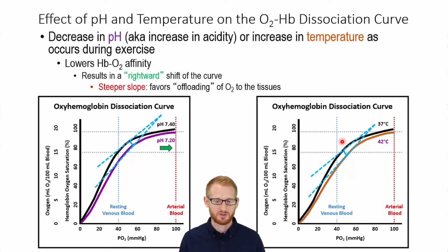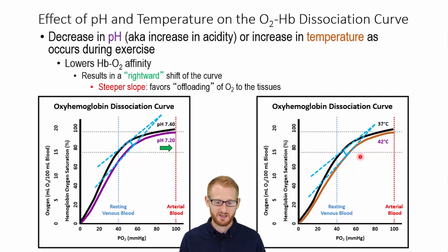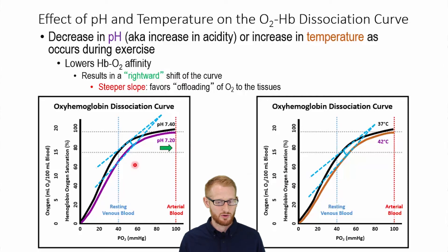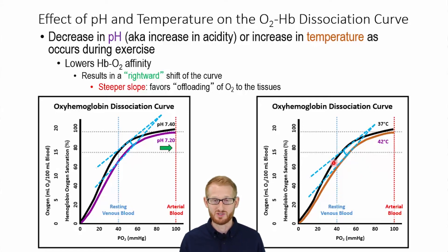The same thing happens with temperature. The black line is normal body temperature in degrees Celsius. The reddish-brown line is an elevated temperature, similar to what you'd see with a high-intensity bout of exercise. The exercise curve with the higher temperature shifts to the right, which means a steeper slope at a given partial pressure of oxygen, so more oxygen coming off at any point along the partial pressure of oxygen scale. Exercise makes you more acidic, which lowers your pH, and makes you hotter, which raises your temperature. Both of these promote oxygen coming off the hemoglobin molecule and going to active tissue, which is a good thing for exercise.